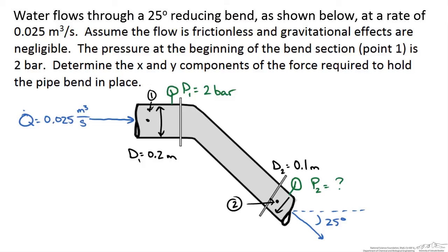We have water that flows through a 25 degree reducing bend as shown below at a volumetric flow rate of 0.025 m³ per second. We are going to assume the flow is frictionless and gravitational effects are negligible. The pressure at the beginning of the bend, point 1, is 2 bar.